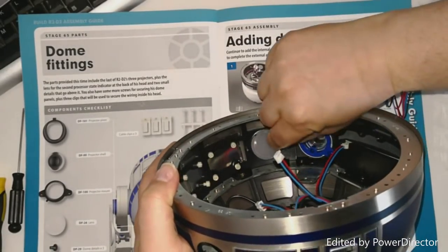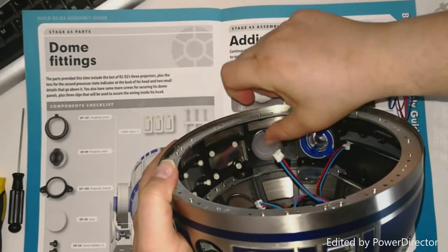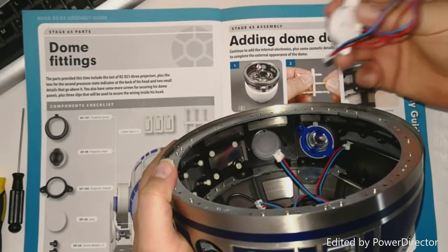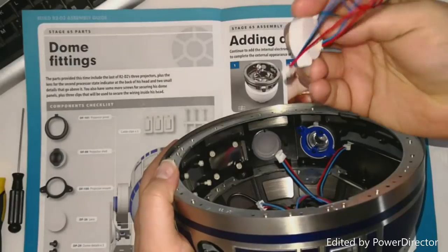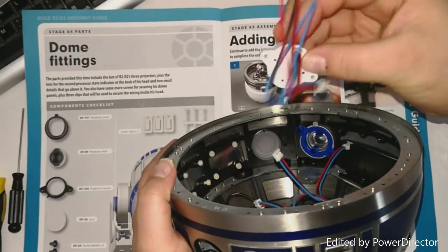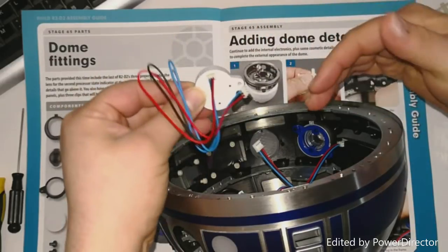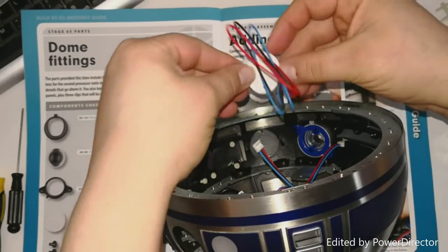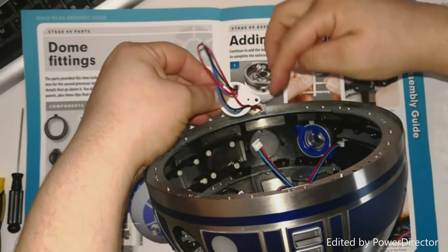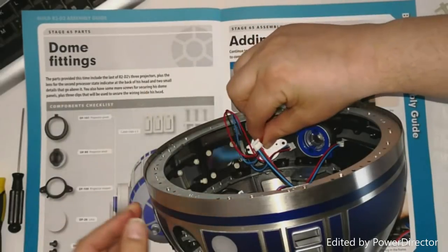This just goes on like so. Then we grab our light that we've got left. Now it goes with the connector, if you're looking at it like this, the connector goes up or the connector goes closest to the rim here.